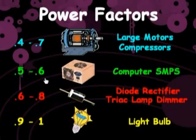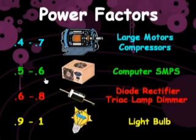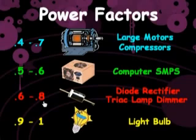A power factor of 0.6 means that 60% of the amps flowing in the electrical wires produce watts that develop operating DC voltages and DC current for this computer power supply, while 40% of the amps are harmonic currents that produce no watts. A power factor of 0.8 means that 80% of the amps produce watts for this lamp dimmer and light bulb, while 20% of the amps are harmonic currents that produce no watts.